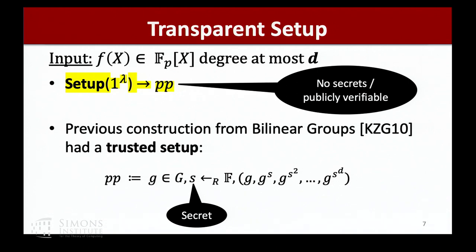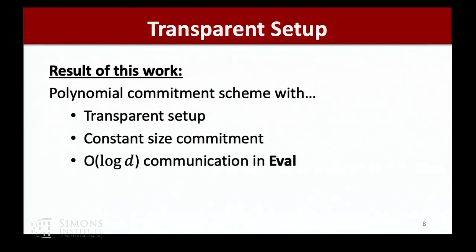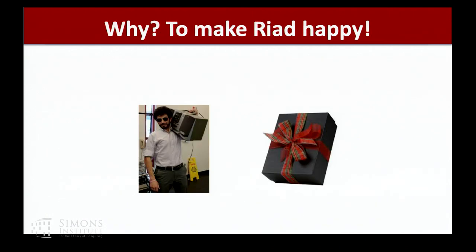Previous constructions for polynomial commitments used bilinear maps, and especially they used a trusted setup where you have a CRS that commits to all of the monomials of a secret evaluation point. There's a secret point S which the setup chooses, and the CRS is just the monomials of the polynomial up to some degree D. In this work, we achieve a polynomial commitment scheme with transparent setup, constant size commitment, and only logarithmic communication and verification time in Eval. We do this mostly to make Riyad happy — it was on his wish list — but also because we can build SNARKs from it.